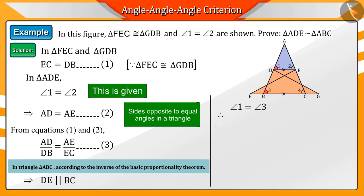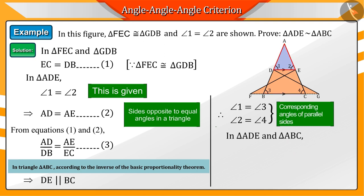Because of which, angle 1 is equal to angle 3 and angle 2 is equal to angle 4. Can you tell why? As we know that the angles corresponding to the parallel sides are equal, because of which...